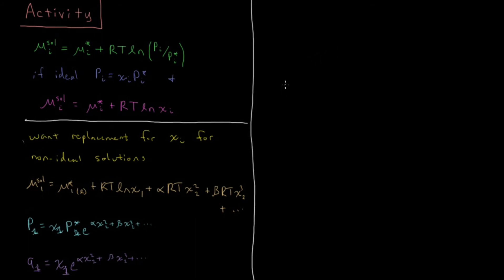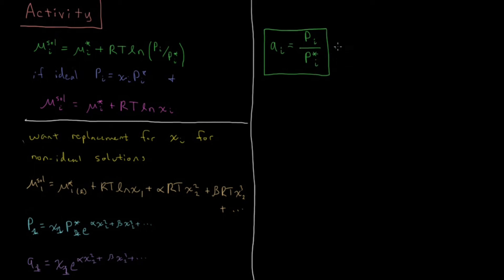To give a formal definition, the activity can be measured experimentally: we measure the vapor pressure of a component of a solution under given conditions, and the activity is that vapor pressure divided by the vapor pressure of the pure liquid under the same conditions. This holds true if the vapor is ideal. If the vapor is non-ideal, we could use partial fugacity and fugacity instead of partial pressure and pressure, but for the most part we won't worry about that.